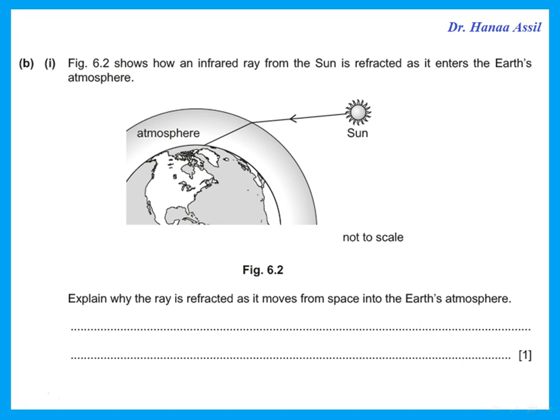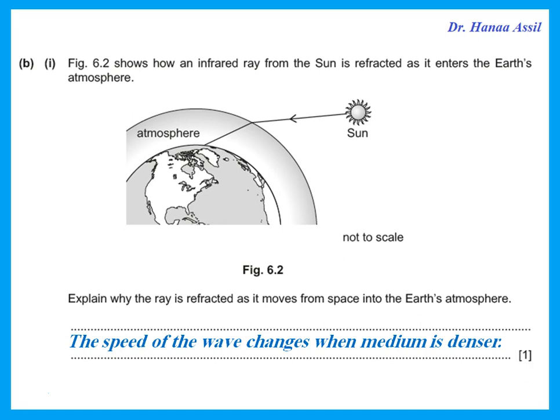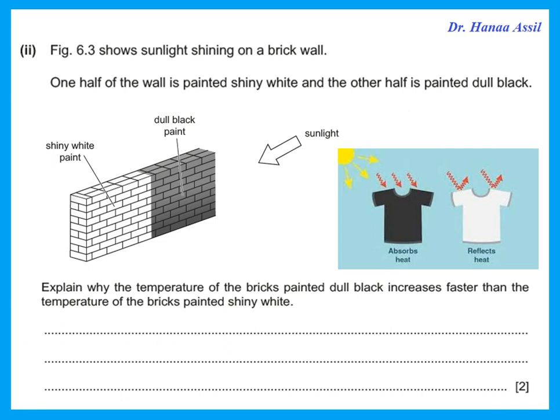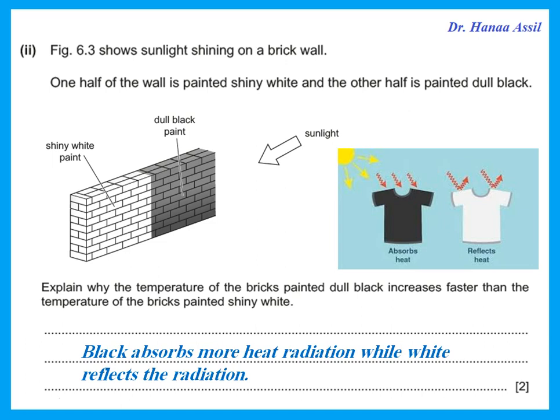Figure 6-2 shows how an infrared ray from the sun is refracted as it enters the Earth's atmosphere. Explain why the ray is refracted. When a wave goes from one medium to another of different density, the wave refracts because the speed of the wave changes when the medium is denser. Figure 6-3 shows sunlight on a brick wall — one half painted white, the other black. The black bricks heat up faster because black absorbs more radiation, while white reflects the radiation and absorbs less.